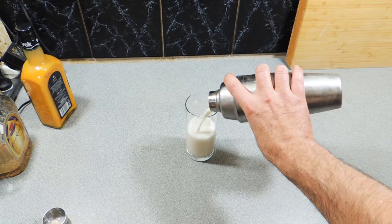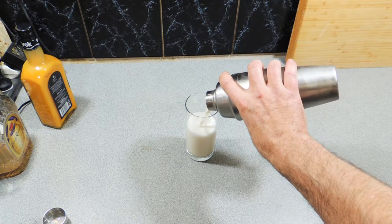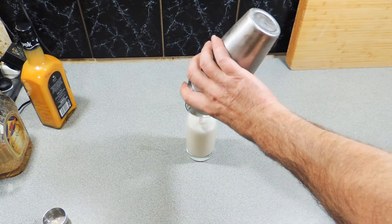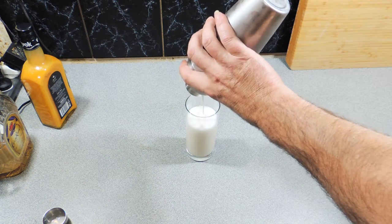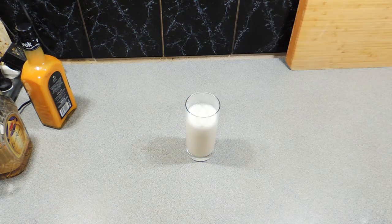Alternatively you could add a little bit more milk if your glass is a little bit large. Strain all that ice off, put our nice mixture straight into the glass like that.